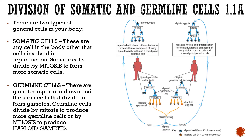Looking at this diagram: let's assume fertilization has happened and you've been created. Whether male or female, that cell continues to divide by mitosis. That first cell — the zygote — is somatic in nature, because you can't reproduce from a zygote. Over years and years you continue to grow through mitosis until eventually, if you choose to have a child, germline cells are required, and that's where meiosis comes in.